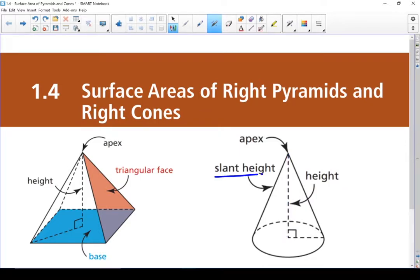That's different than the slant height. That slant height is along the outside edge. So it's as if an ant were walking up that pyramid. How far would it have to go to get to the apex?